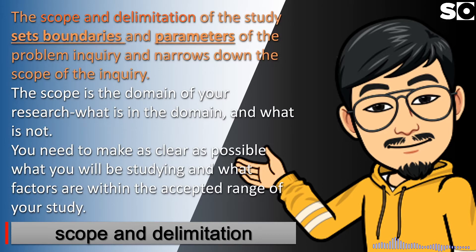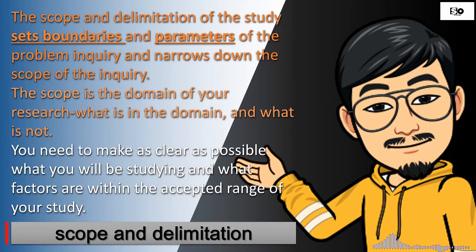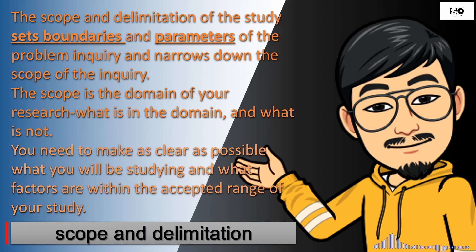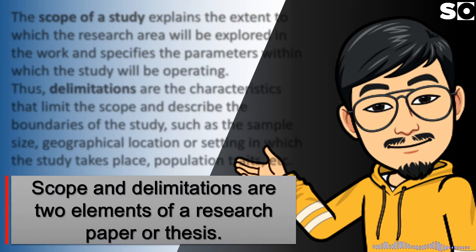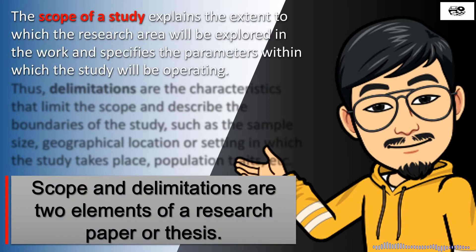You need to make, as clear as possible, what you will be studying and what factors are within the accepted range of your study. Scope and delimitation are two elements of a research paper or thesis. The scope of a study explains the extent to which the research area will be explored in the work and specifies the parameters within which the study will be operating.